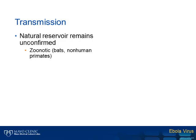Regarding transmission of Ebola virus, the natural environmental reservoir for the virus is unconfirmed, though scientists do believe that Ebola virus is a zoonotic agent and is maintained in the animal host, most likely in fruit bats. The means by which Ebola virus is transmitted from the animal host to humans, however, remains unclear.